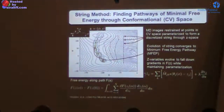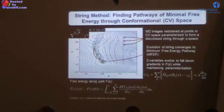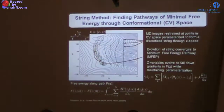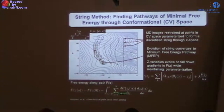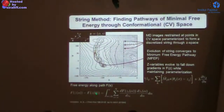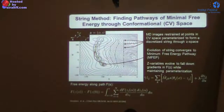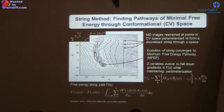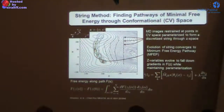Running the coupled replica simulations from some initial path, the Z variables evolve until the string collapses into the minimal free-energy path connecting the two states. At any point, one can integrate along the path: letting alpha parameterize arc length, the chain rule gives the free energy difference from position zero to position s along the path. This works in very high-dimensional CV spaces, always yielding a 1D free energy profile along the path.